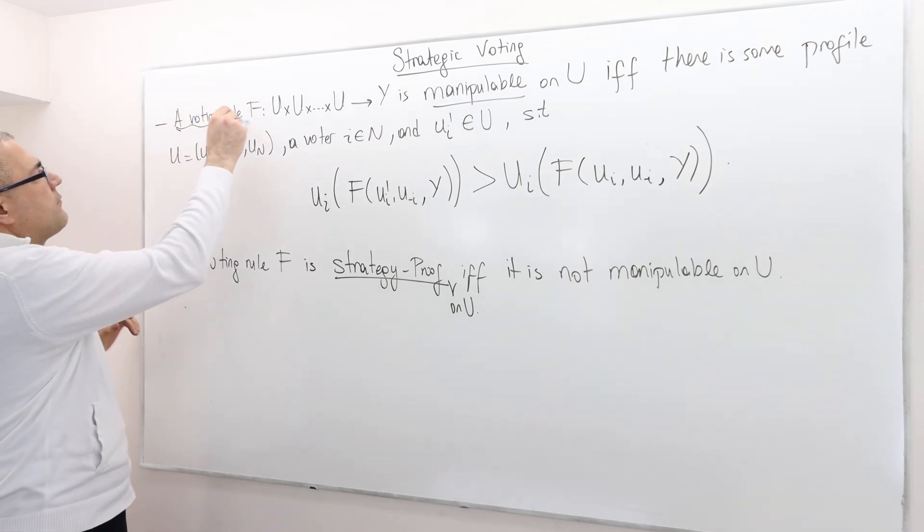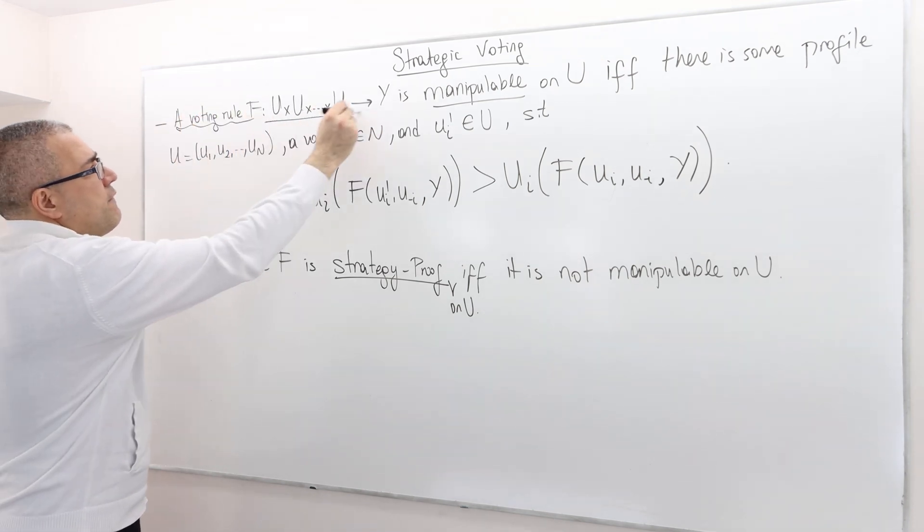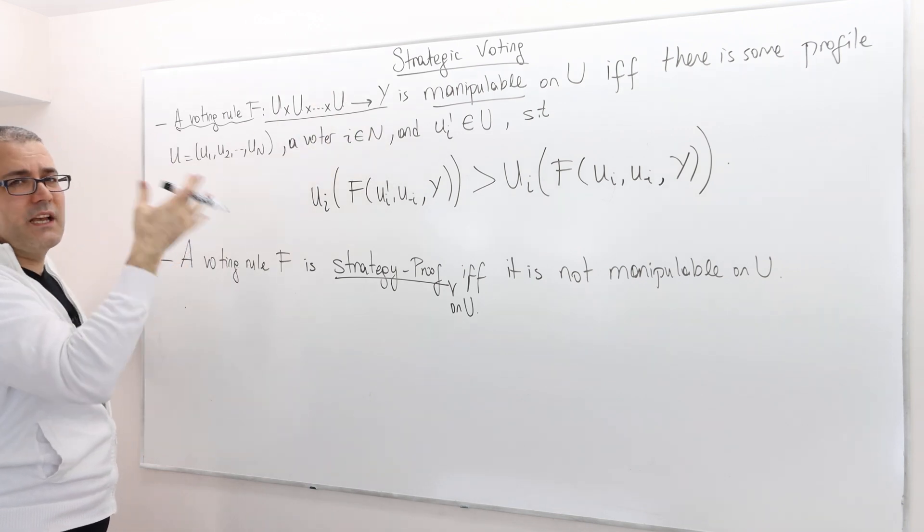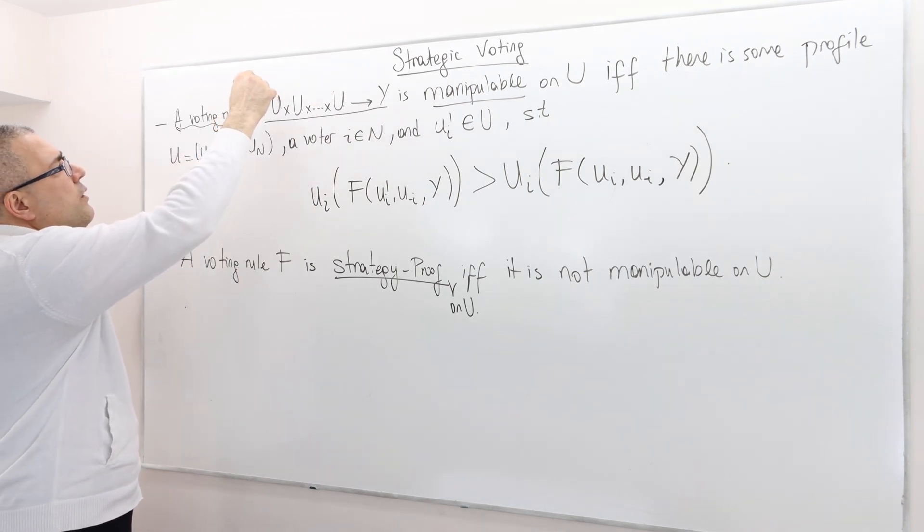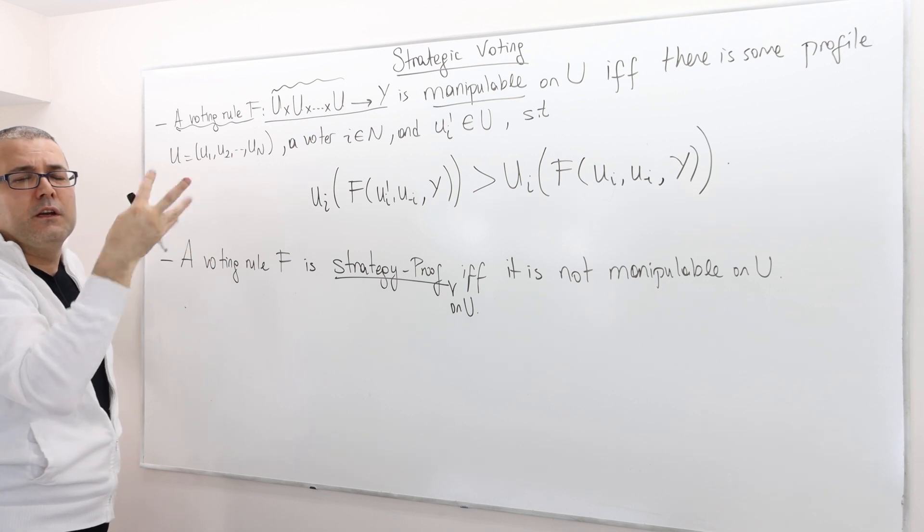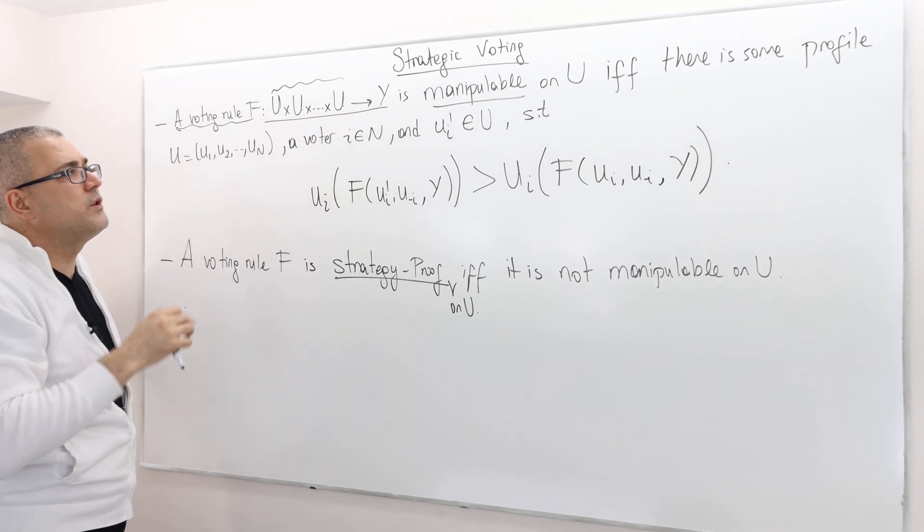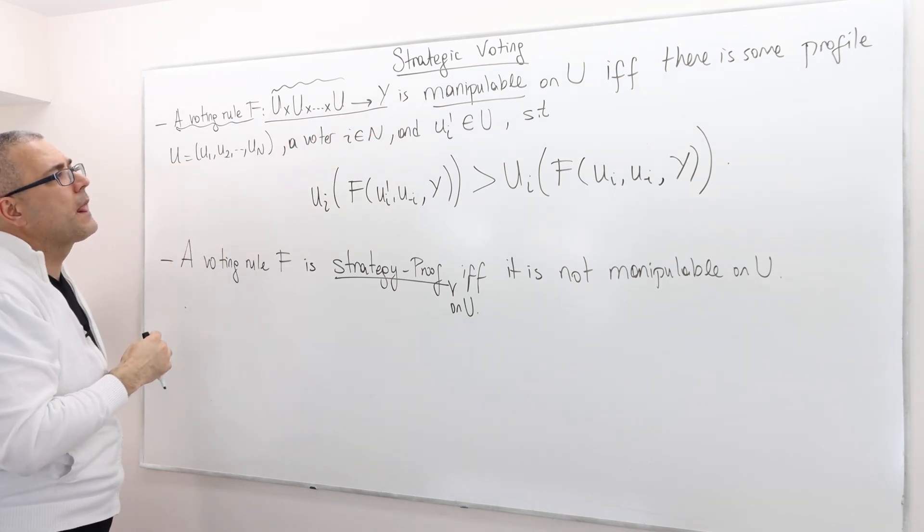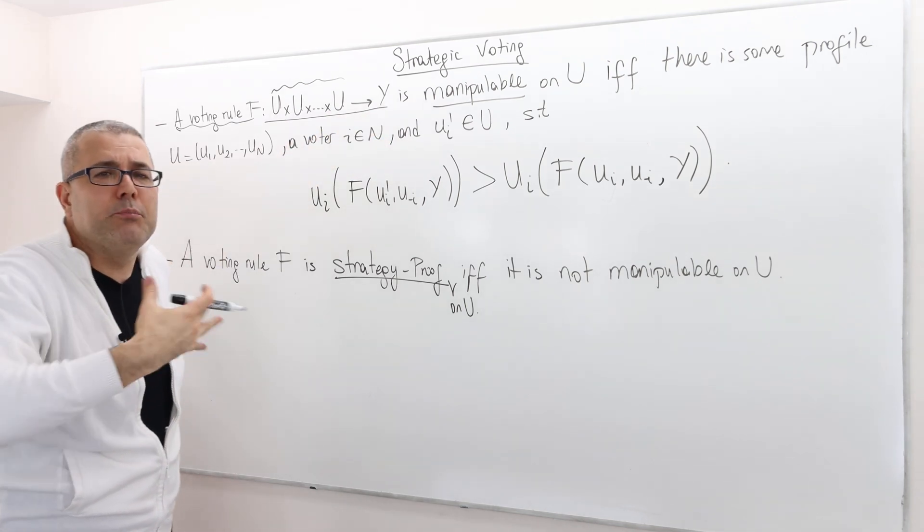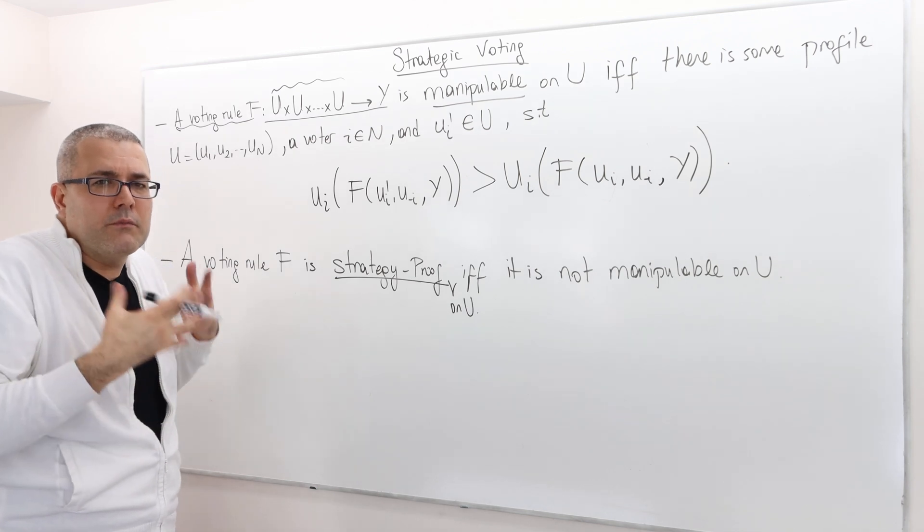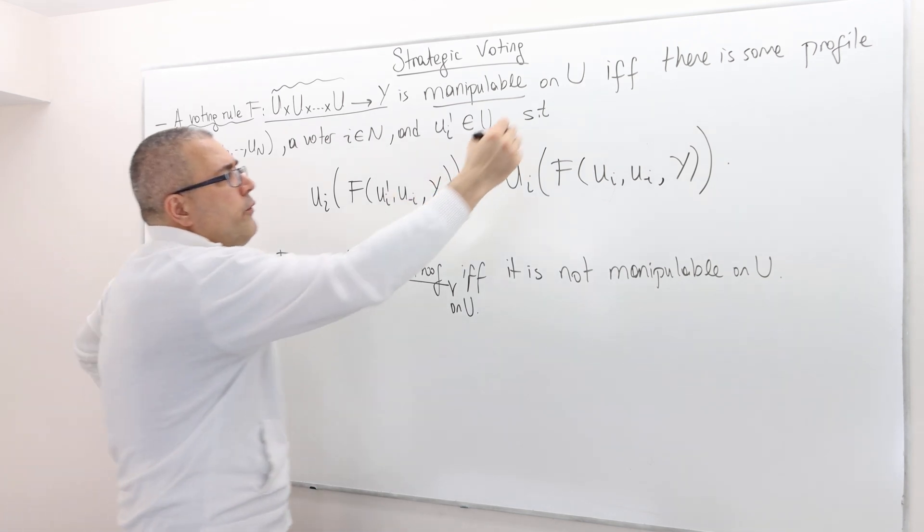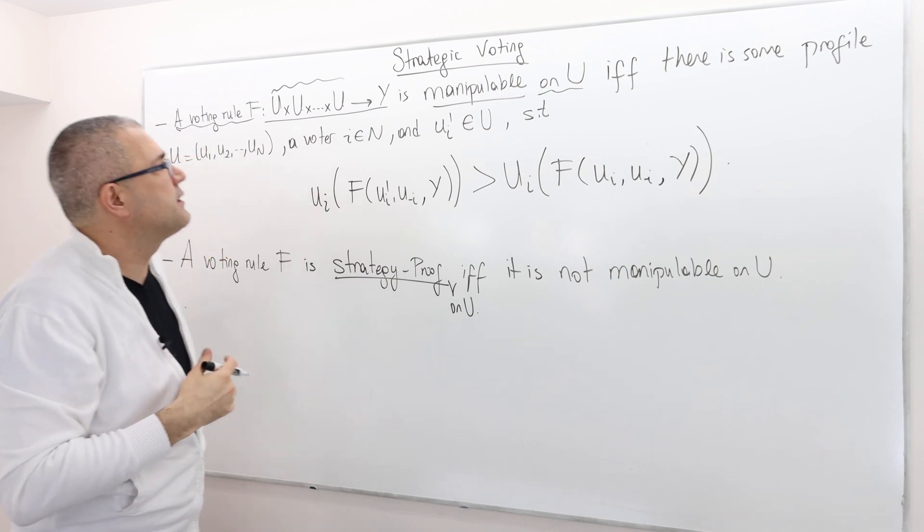Okay. A voting rule F. Well, remember, it's a function. I mean, it's a correspondence which takes a preference profile, a vector as an input and spills out an outcome, which is a subset of Y, is called manipulable. All right. So it's manipulable on some domain of preferences U.